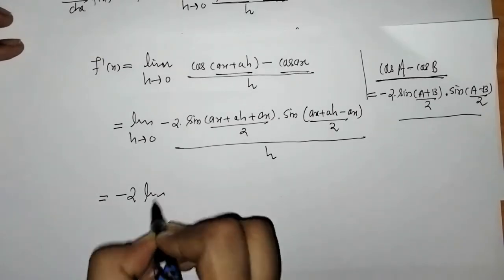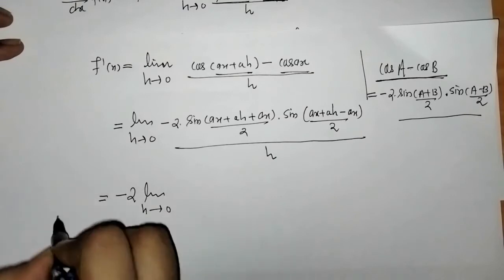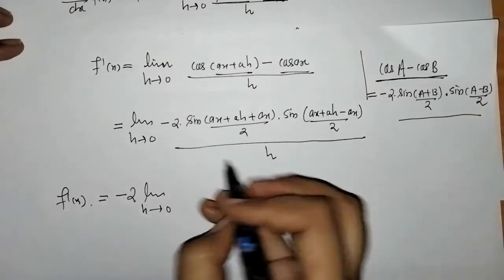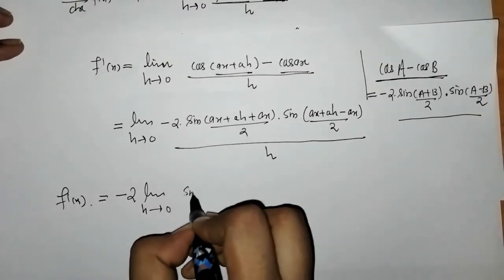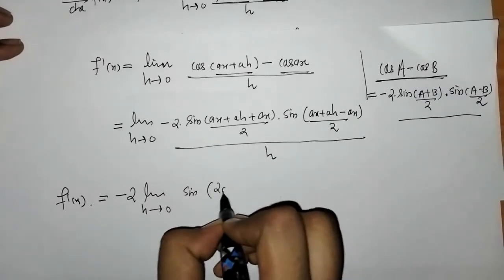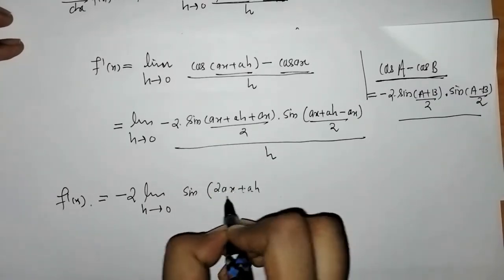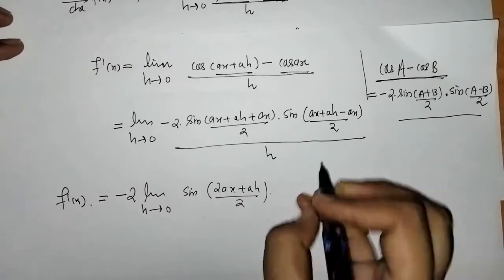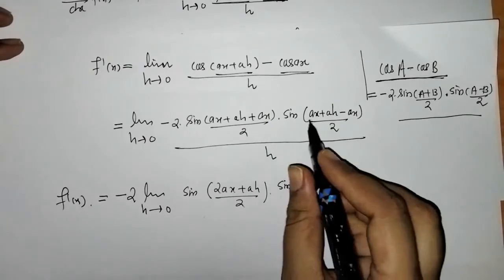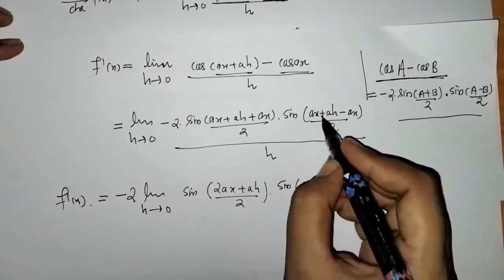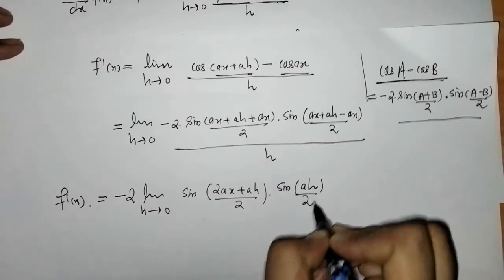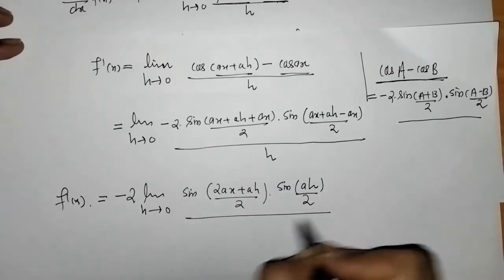Taking −2 outside the limit, on simplification we get cos((2ax + ah)/2) into sin(ah/2) upon h.